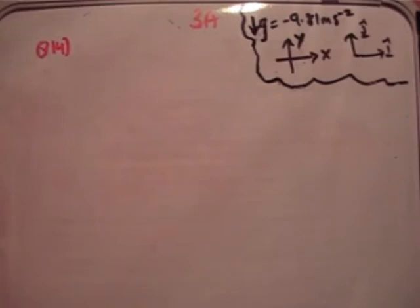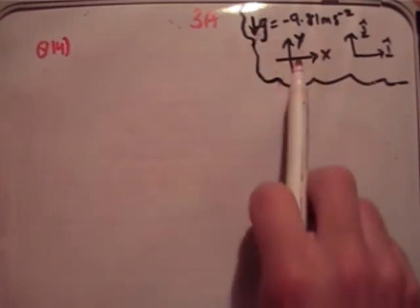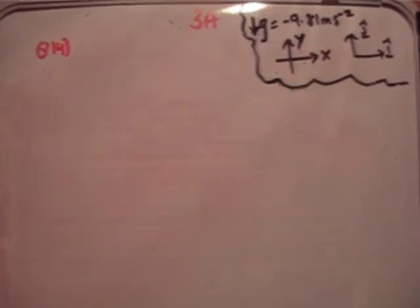The first thing we do is note that g is negative 9.81 meters per second squared in this direction. We have our x and y plane, our Cartesian plane there, and we have our unit vectors as normal.